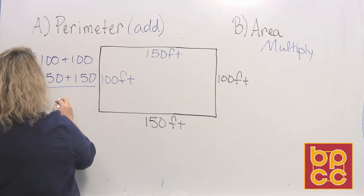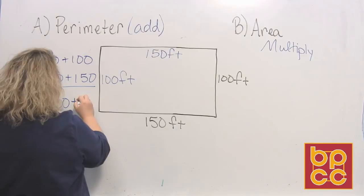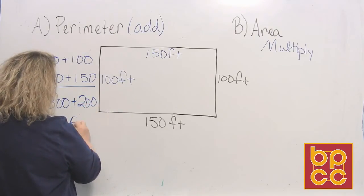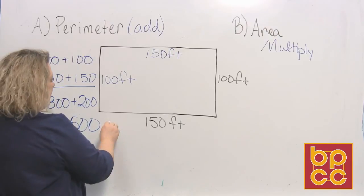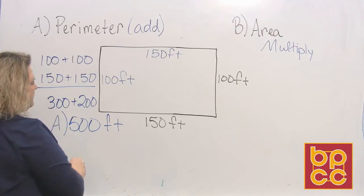which is a total of 500. And because we are going to label our answer, it's 500 feet for the perimeter. So the answer to part A is 500 feet.